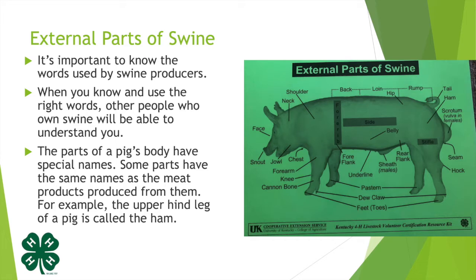The parts of a pig's body have special names. Some parts have the same names as the meat products produced from them. For example, the upper hind leg of a pig back here is called the ham, and of course that's the ham that we eat.